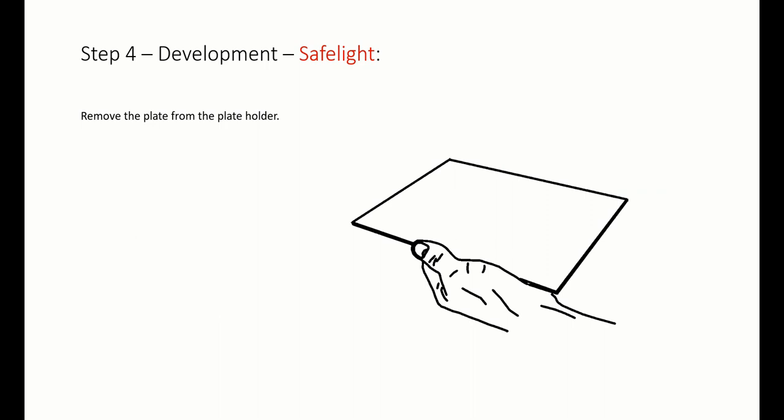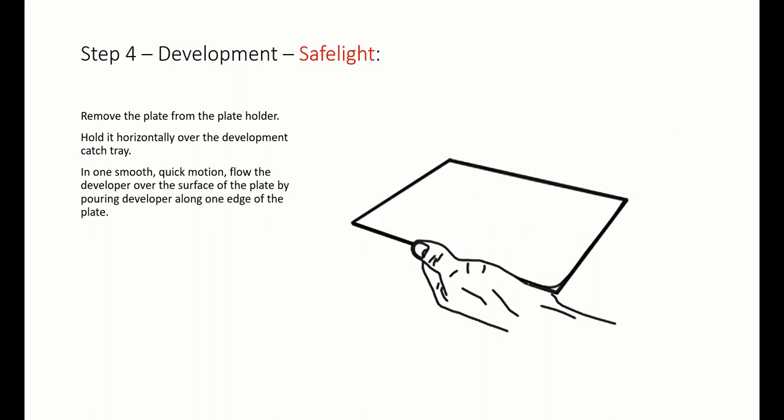Step 4: Development. Remove the plate from the plate holder. Hold it horizontally over the development catch tray. In one smooth, quick motion, flow the developer over the surface of the plate by pouring along one edge.